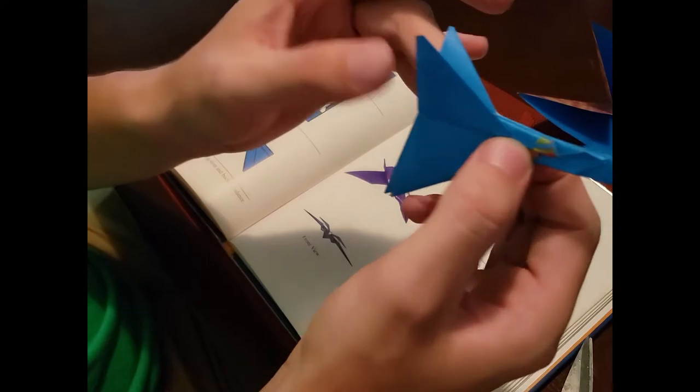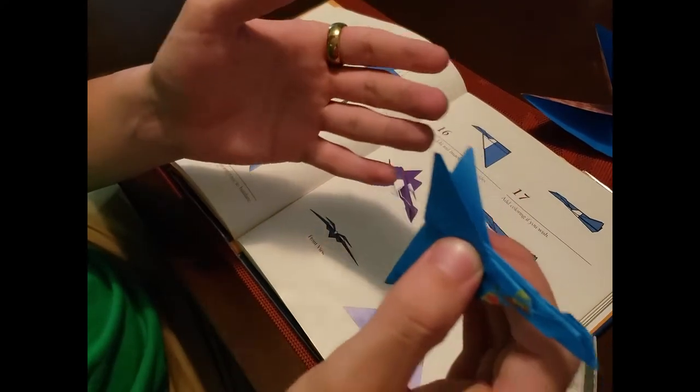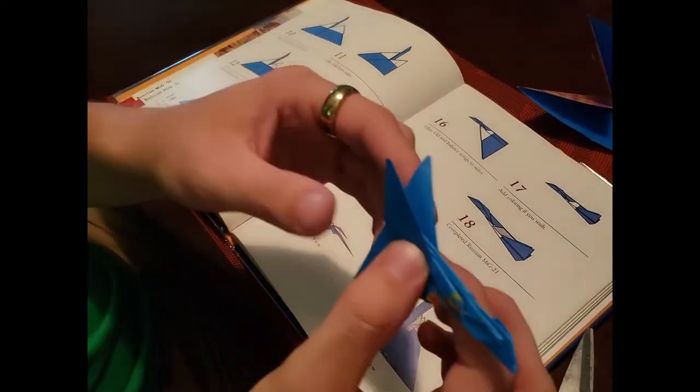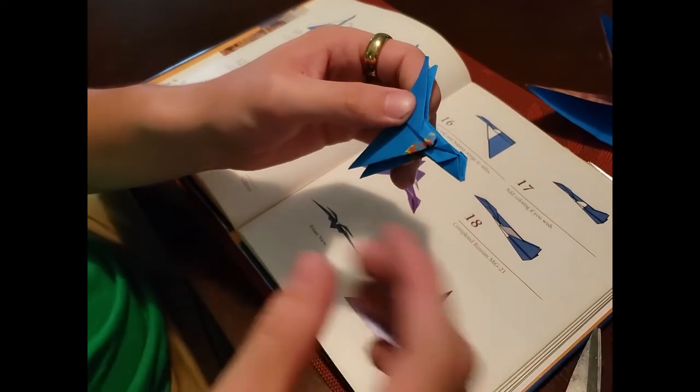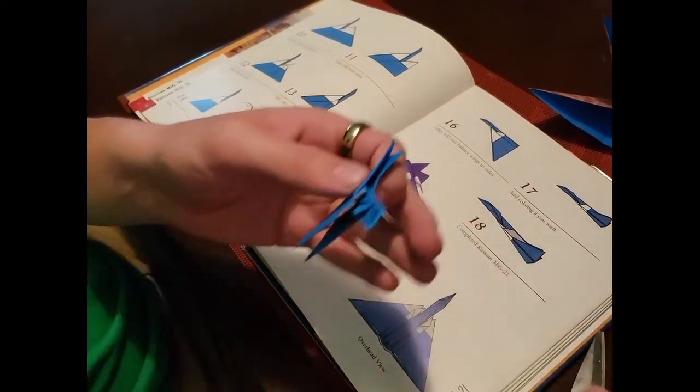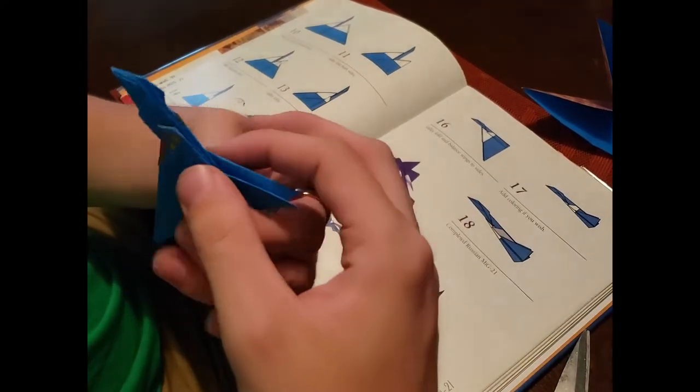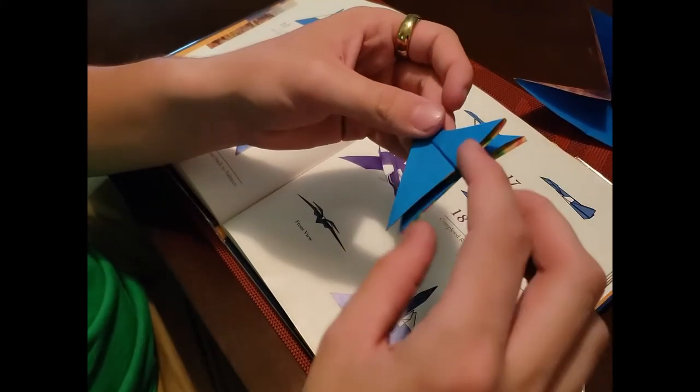So this is roughly what you should have by now. Like I said, no two folds are ever the same. So what I may be folding, yours may be slightly different. You may have a thicker fold or a thinner fold. But after you fold these two wings up.